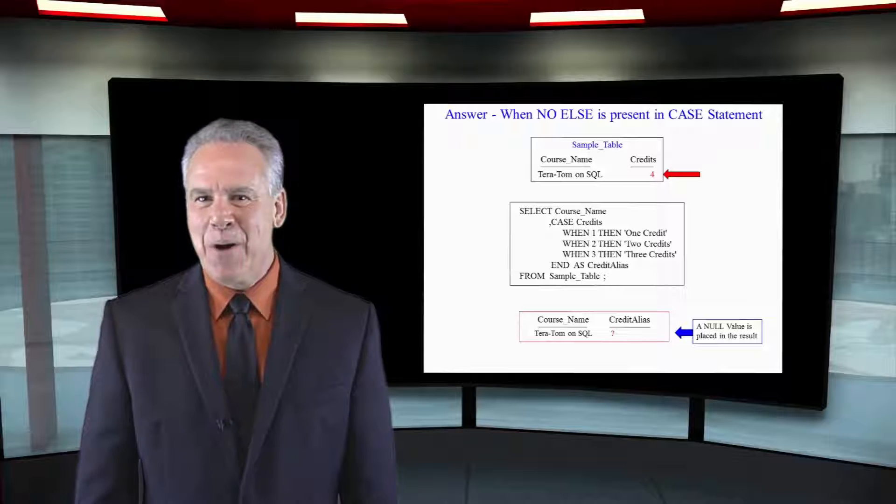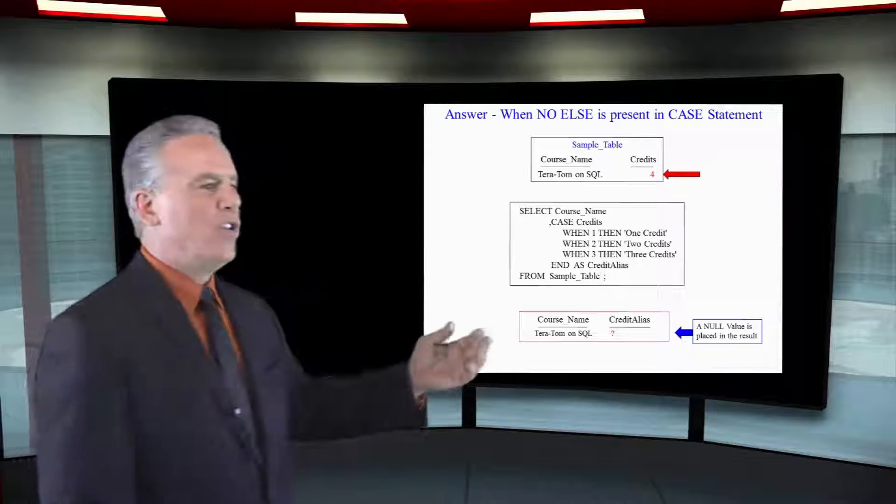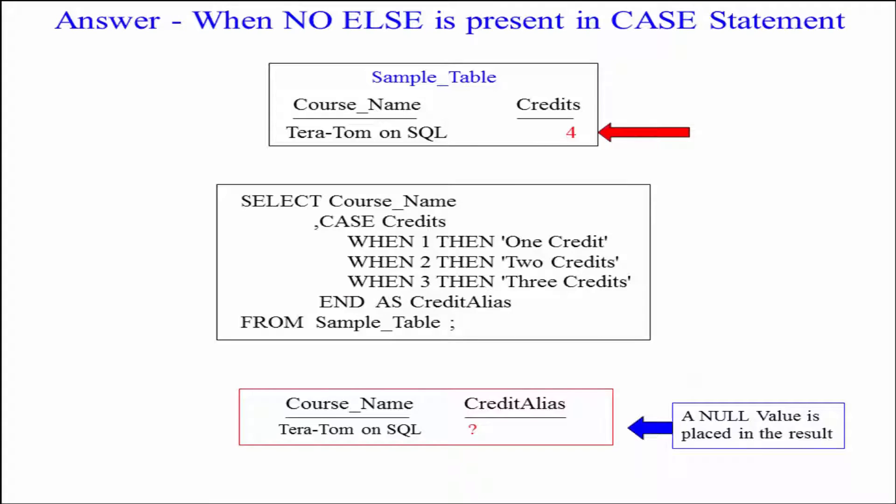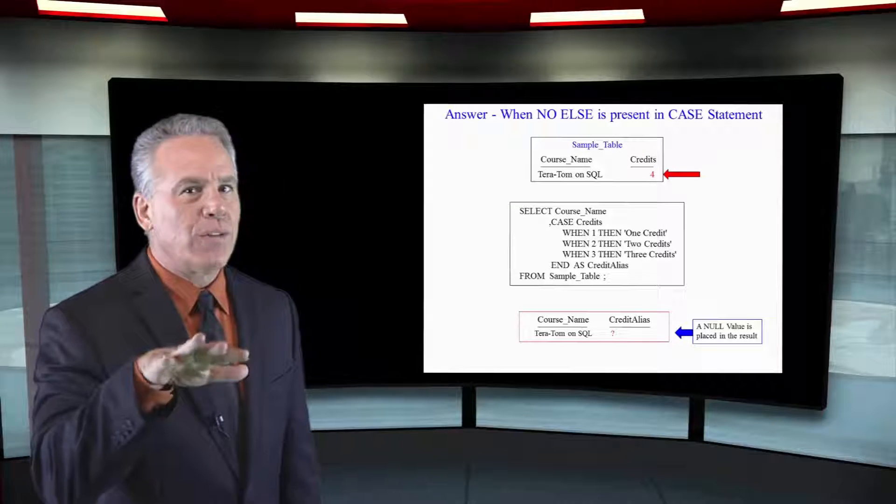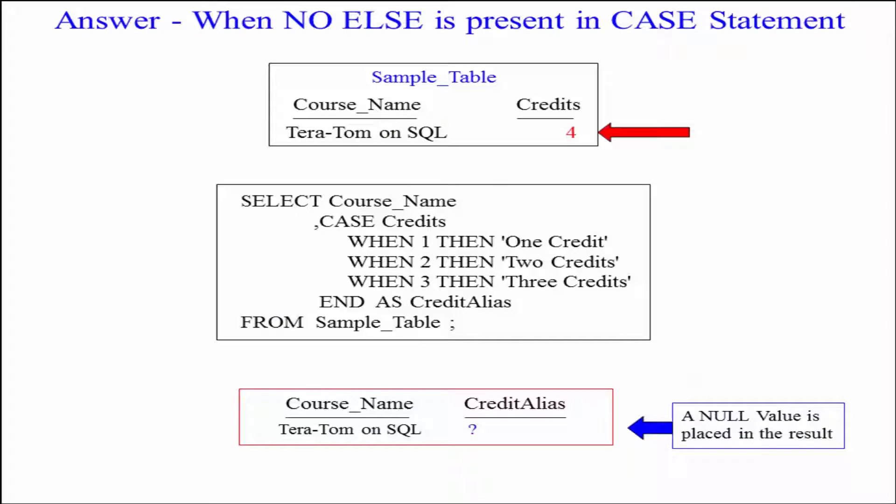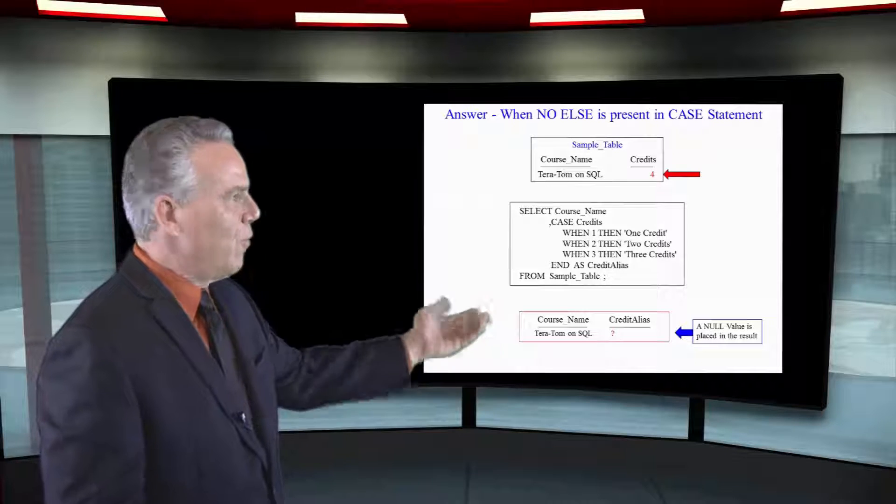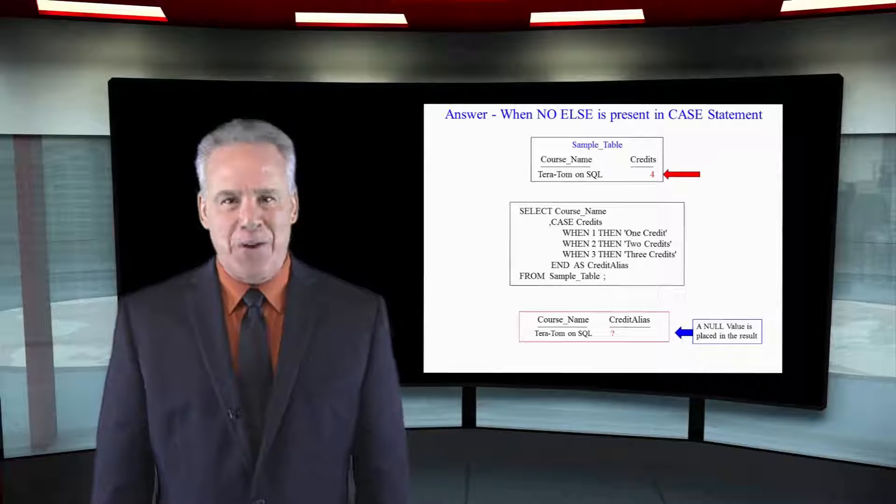Did you nail it? I'm hoping so. It's going to be a null. We know that it's four credits. We've got ourselves a valued case statement because we're casing the credits. Is it one? No. Is it two? No. Is it three? No. So it falls through. We don't have an else statement here. So it's going to return a null value.